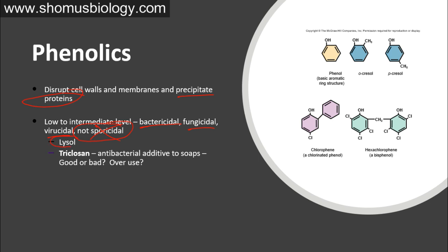Examples of phenolics include Lysol and triclosan. Triclosan is an antibacterial additive to soaps with intermediate activity. However, the use of Lysol and triclosan can be problematic because bacteria can develop resistance against these chemical agents, and once they develop chemical resistance, these agents can no longer be used to kill the organisms.